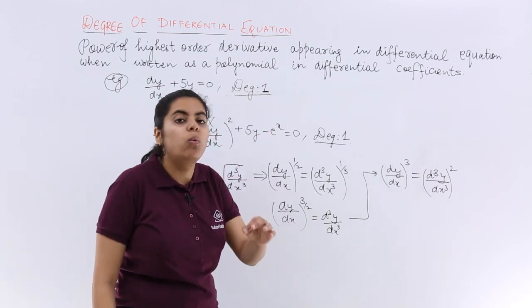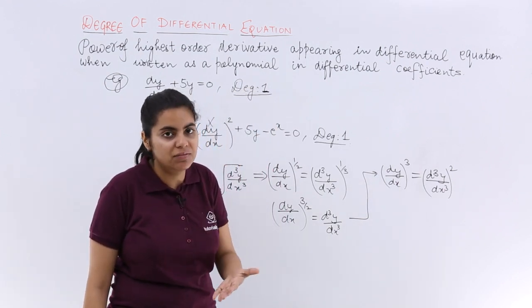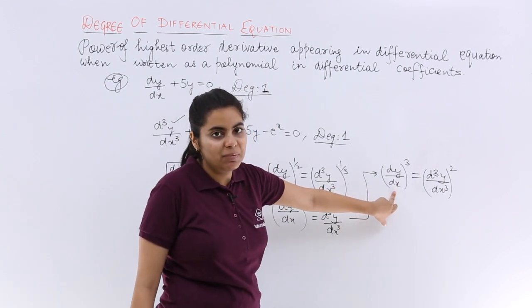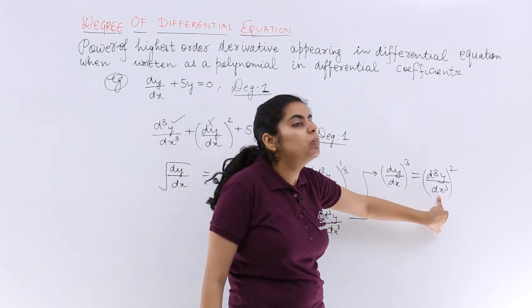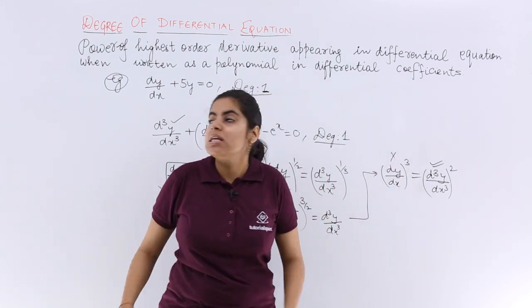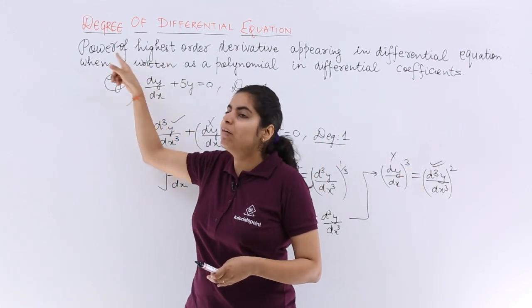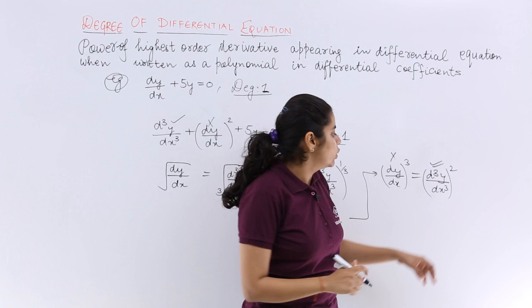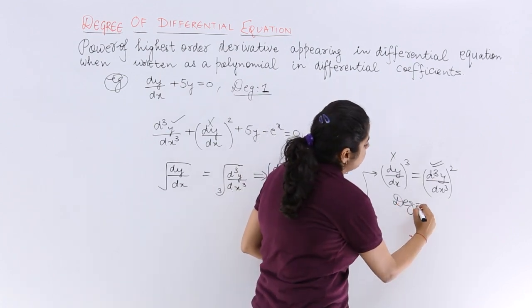Now decide what is the highest order derivative. So this is only dy/dx. But this is d³y/dx³. So you have to consider this term. Forget this term. So the highest order derivative, power of it is what? Power is 2. So the degree is 2.